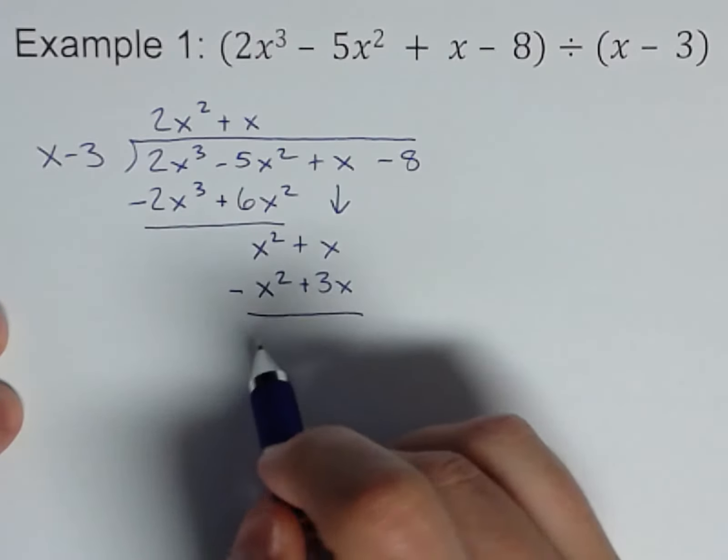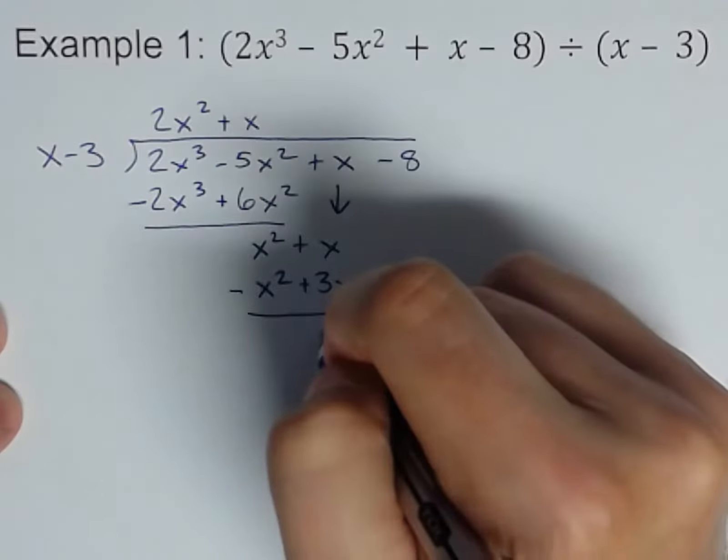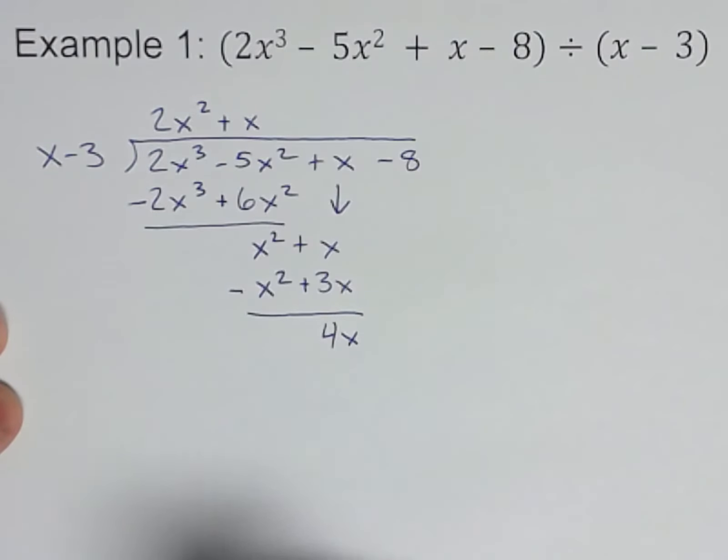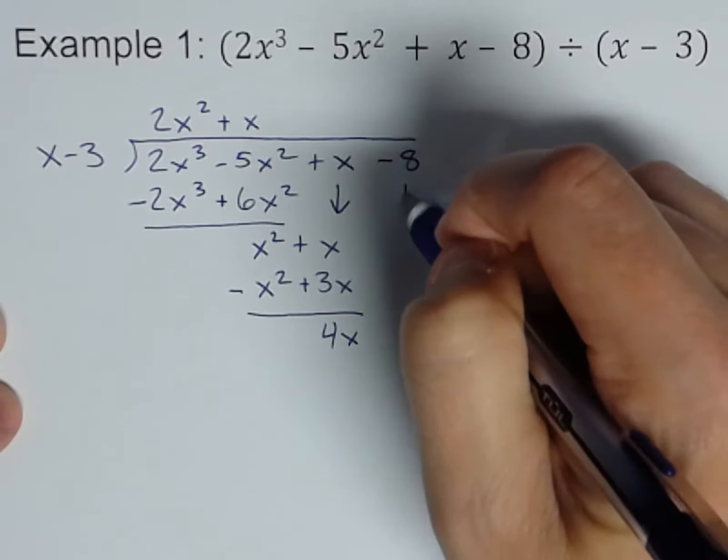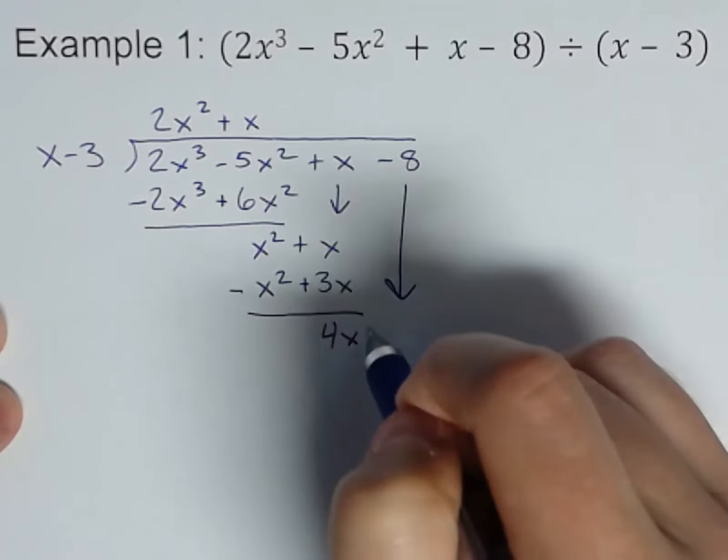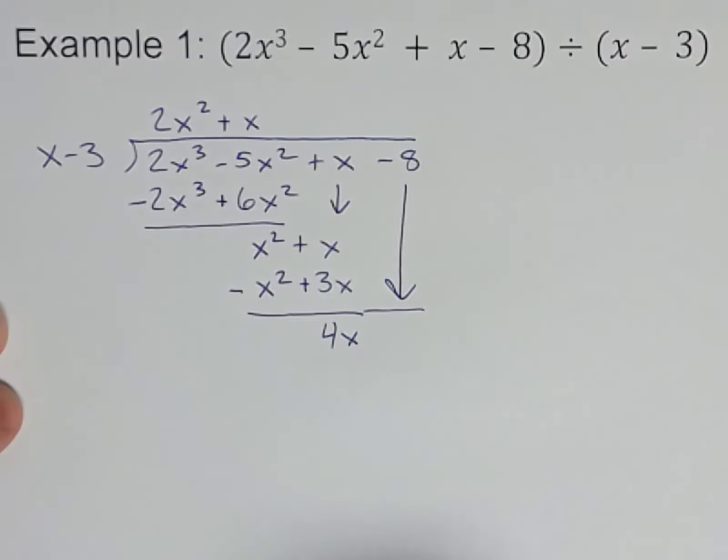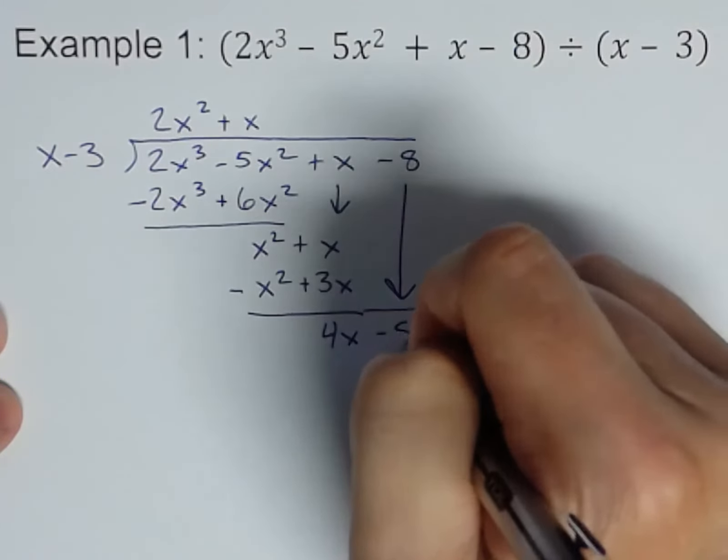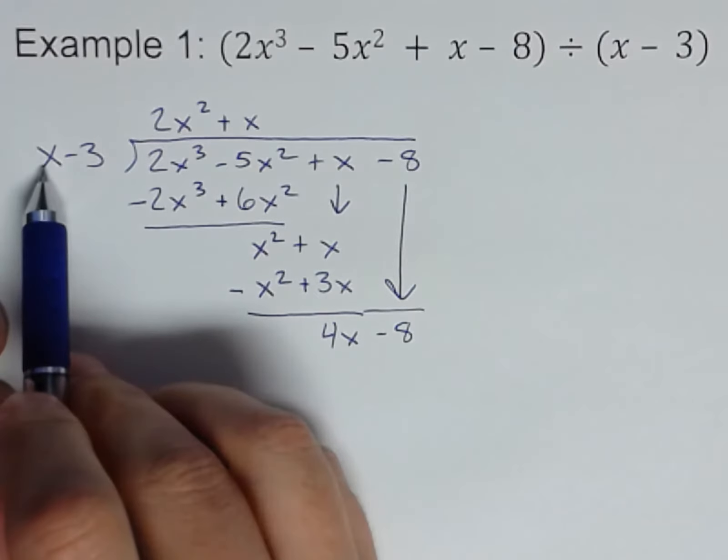So be careful with that. x² - x² goes away. x + 3x is 4x. Now we're almost done; we still got another one though. So bring it down. You don't have to draw the arrows; I'm just doing that to help illustrate here. So -8.